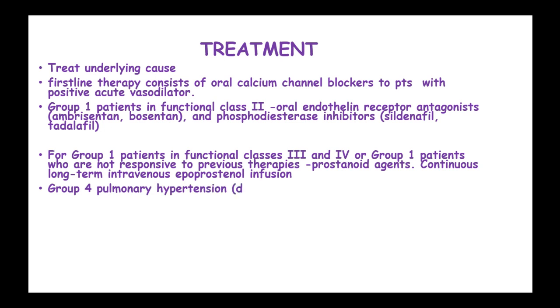For Group 4 pulmonary hypertension due to thromboembolic disease, long-term anticoagulation agents should be administered, and pulmonary thromboendarterectomy can be done in patients who would have adequate benefits from this procedure.